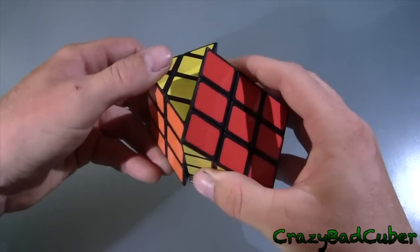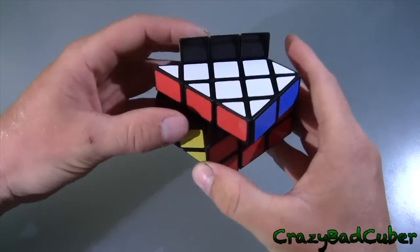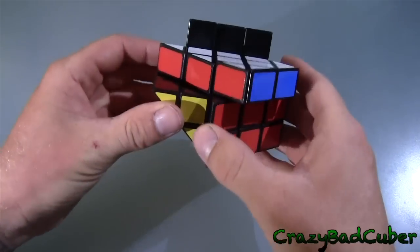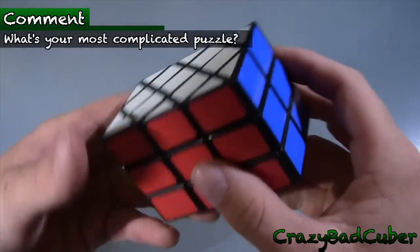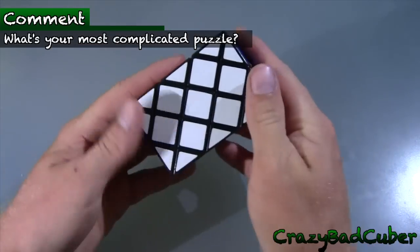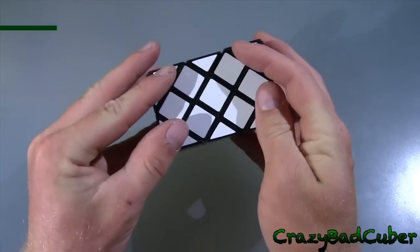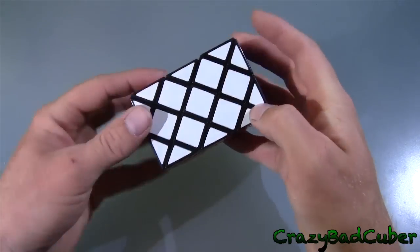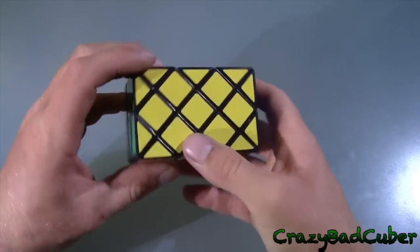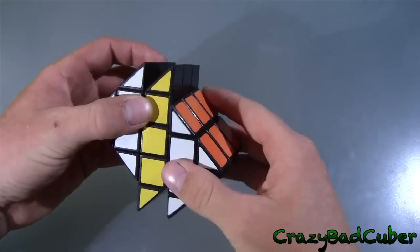This is a shape mod. This doesn't turn, this turns. Wow, this is going to be pretty complicated. I'm not sure what this is called, but you can see that it's basically a 3x3 if you took these parts away. It's a 3x3 with these corners chopped and added on here.